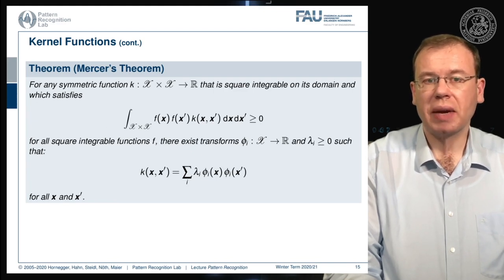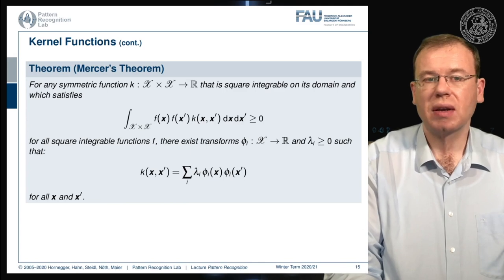There exists a phi i from x to r and lambda i greater or equal to zero such that this kernel function k can be expressed as a sum over lambda i's and feature transforms phi i of x times phi i of x prime for all x and all x prime.